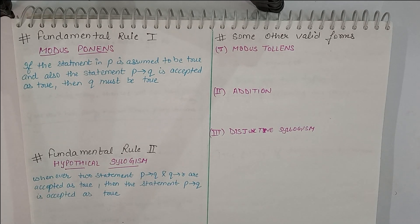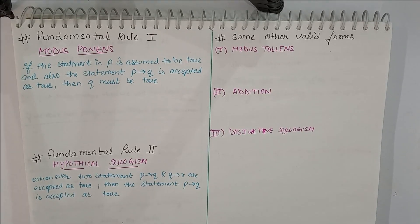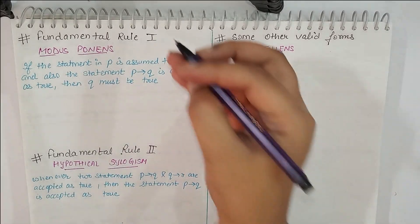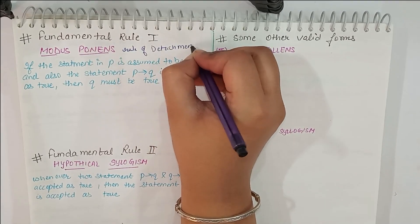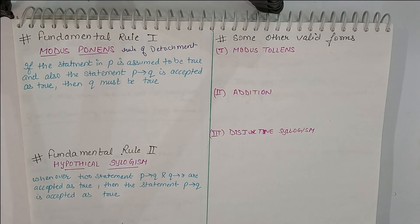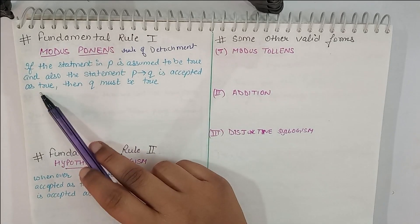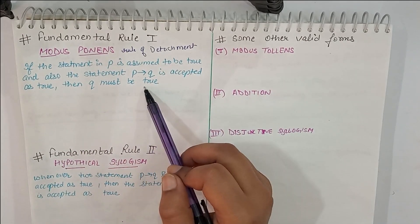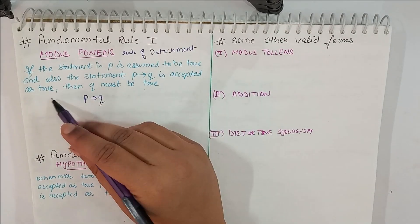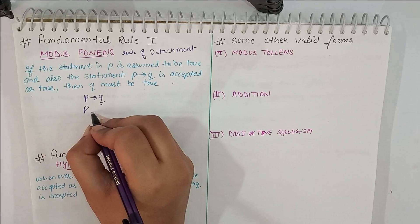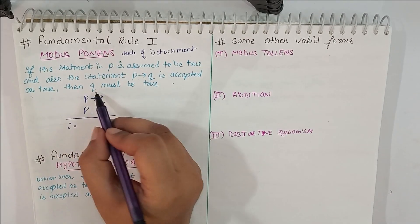In the last video we learned about what an inference system is. An inference system has two fundamental rules. Rule number one is known as Modus Ponens, also known as the rule of detachment. Modus Ponens says: if the statement P is assumed to be true and the statement P implies Q is accepted as true, then Q must be true.